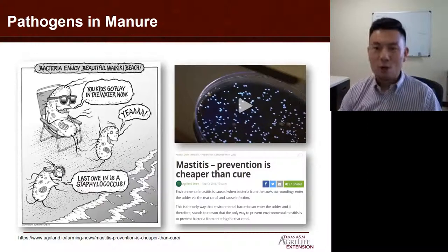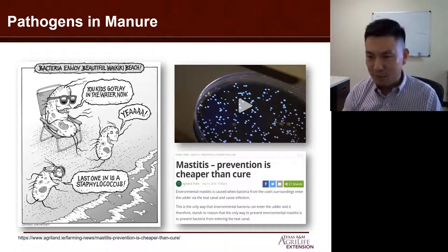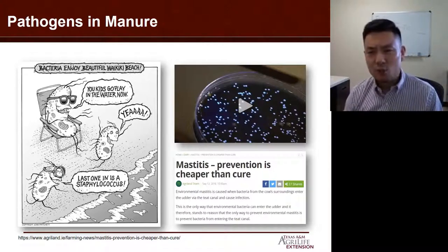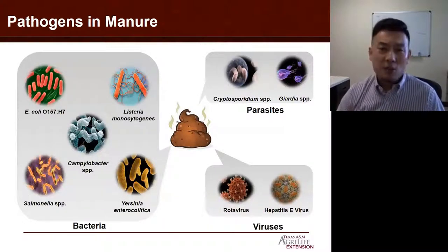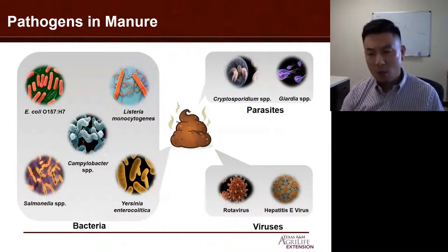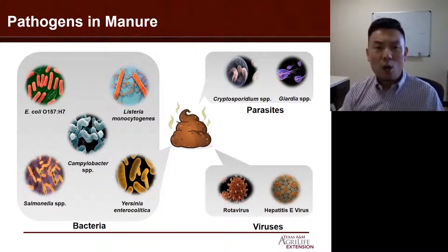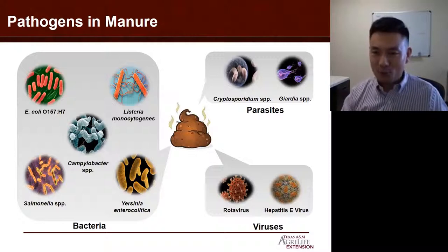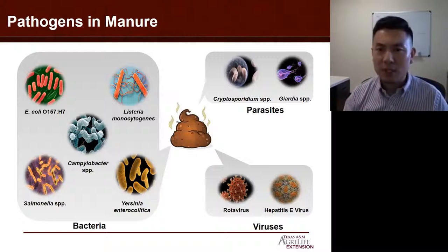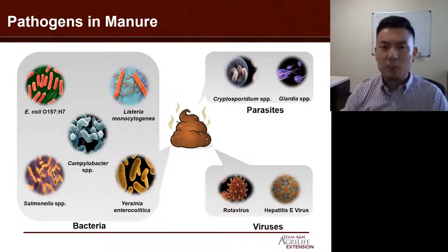Manure is obviously one of the major sources for pathogens. It's important for us to learn what we can do through treatment to reduce pathogens in manure and mitigate our concerns. We categorize pathogens in manure into three groups: bacteria, parasites, and viruses. Through all my research I focus on bacteria and especially bacterial indicators, because most manure folks don't have the capacity to analyze each individual microorganism. Therefore we use bacterial indicators.